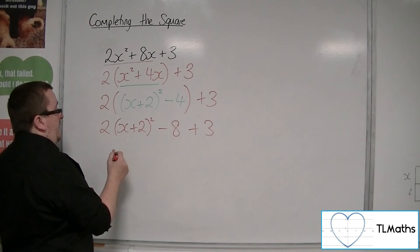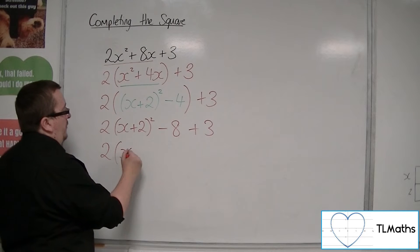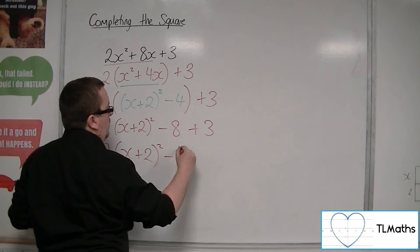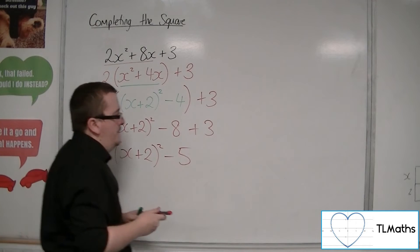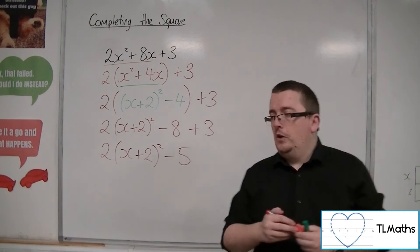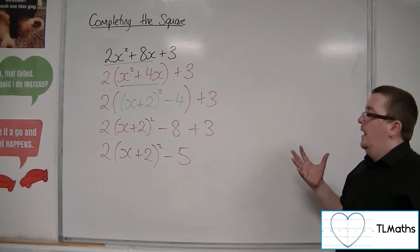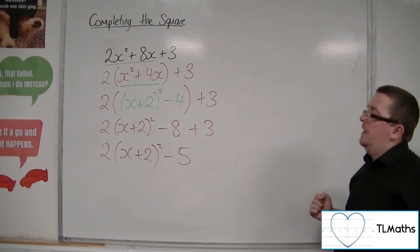So I can now simplify that to 2 lots of x plus 2 squared, take away 5. So that is conceptually what I am doing here.